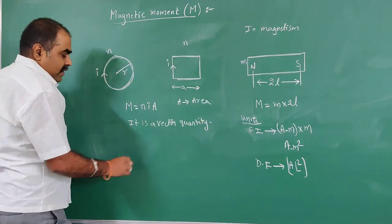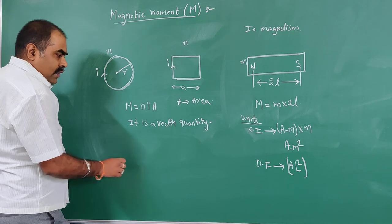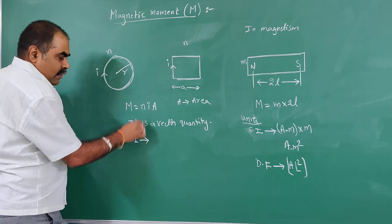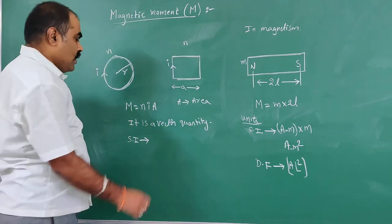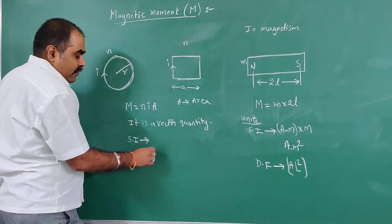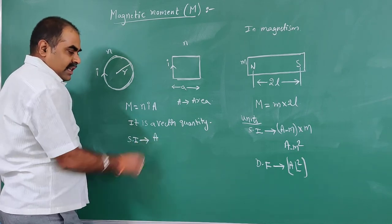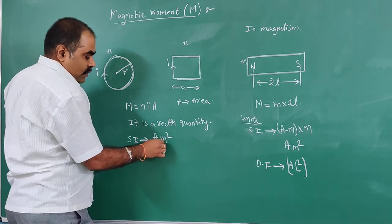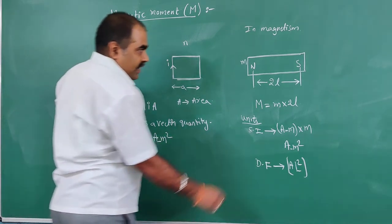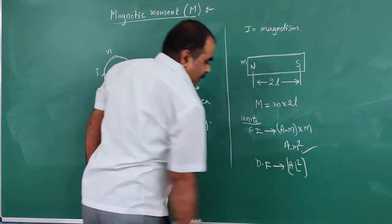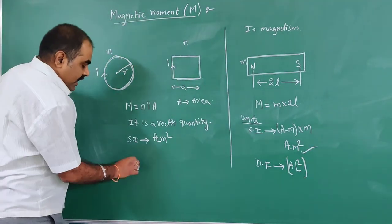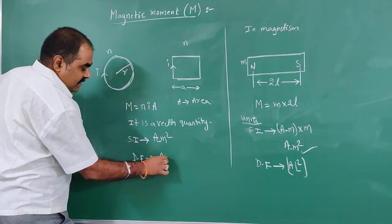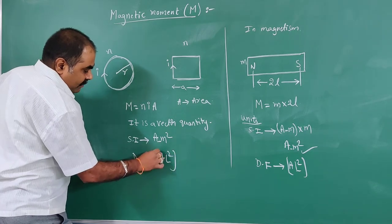Now let's consider the units. For N there are no units. For current the unit is ampere. Area has a unit of meter squared in the SI system. So the unit of magnetic moment is ampere-meter squared — same as in the magnetism chapter. The dimensional form is A·L².